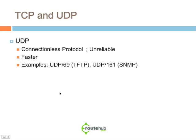UDP is kind of the opposite of what TCP is. It is considered a connectionless protocol, but is faster. It does not do any kind of three-way handshake of a SYN, a SYN-ACK, and another acknowledgement. Because it doesn't do that, it is considered a lot faster. Some examples of UDP: UDP port number 69, which is for TFTP, or UDP port number 161, which is reference for SNMP.